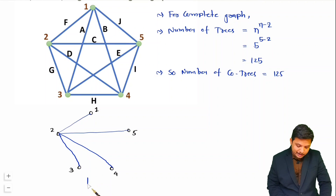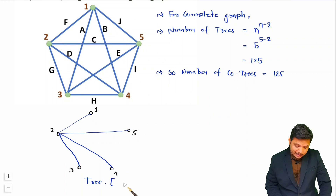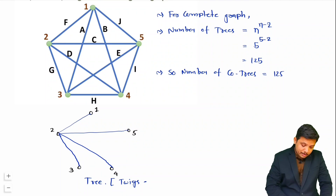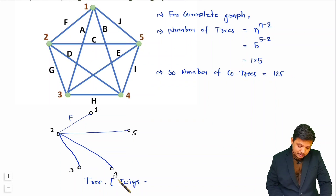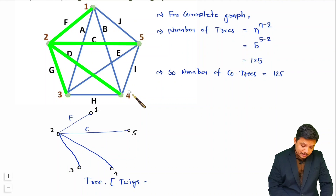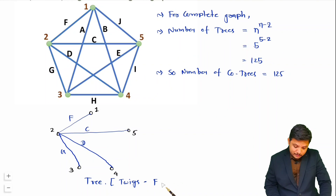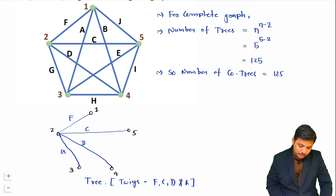When we represent a tree, the branches are represented by twigs. You can see this branch is F, this branch is C, this branch is D, and this branch is G. So the twigs of this tree are F, C, D, and G.